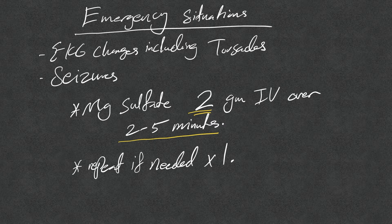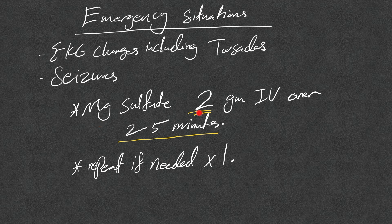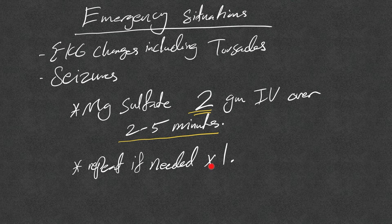In emergency situations like EKG changes including torsades de pointes or seizures, we give magnesium sulfate 2 grams IV over 2 to 5 minutes as a bolus, and repeat if needed times one.